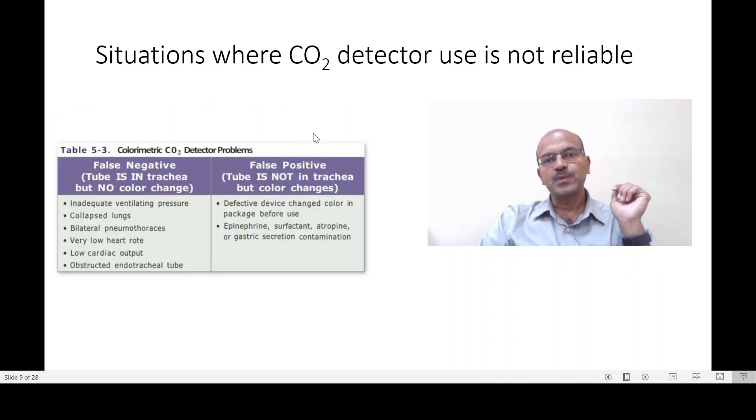There are some situations where the carbon dioxide detector use is not reliable. Of course, the most important thing is if you forget to pull out the tag if it is needed to be pulled out. You may have both false negatives when the tube is in the trachea but doesn't change color, or a false positive where the tube is not in the trachea but the color changes. This is less common.